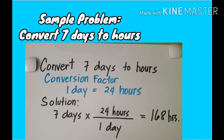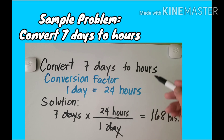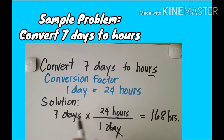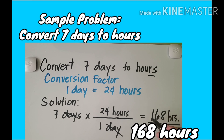You can see the remaining unit is hours, which is the required unit. Multiply 7 by 24 hours, which equals 168 hours divided by one — still equal to 168 hours. So that means seven days is equal to 168 hours.